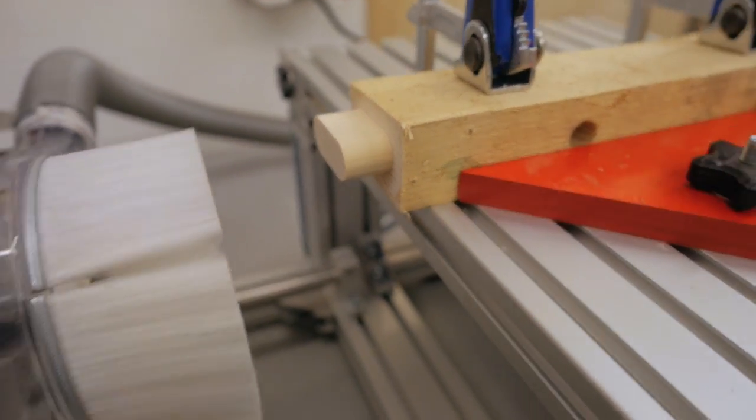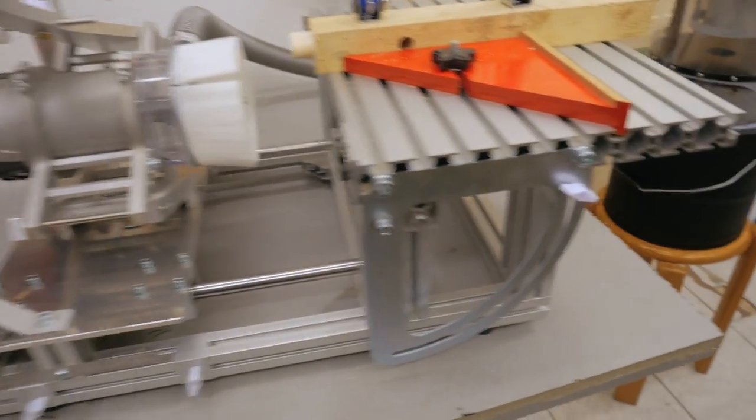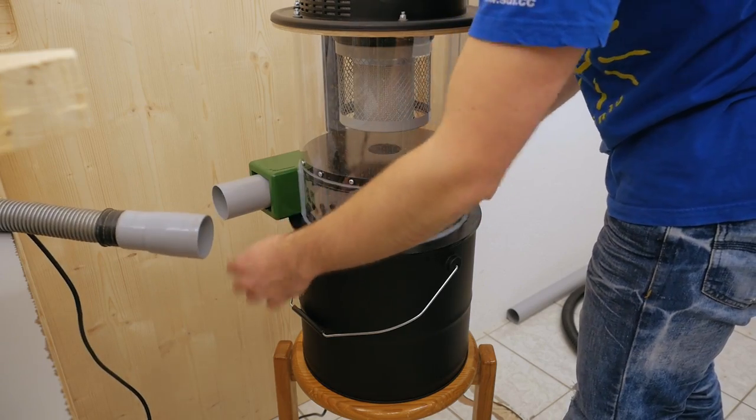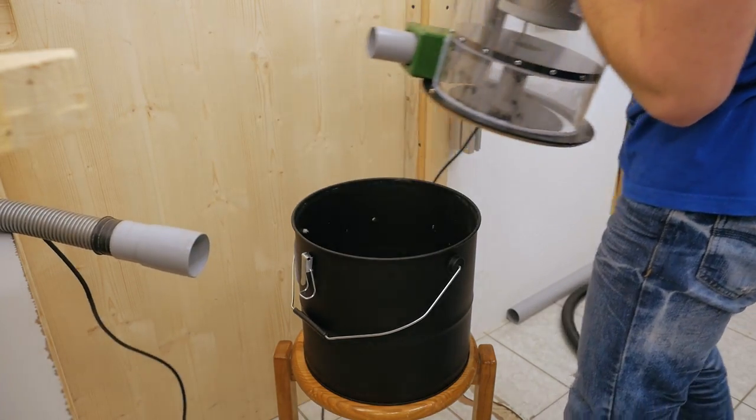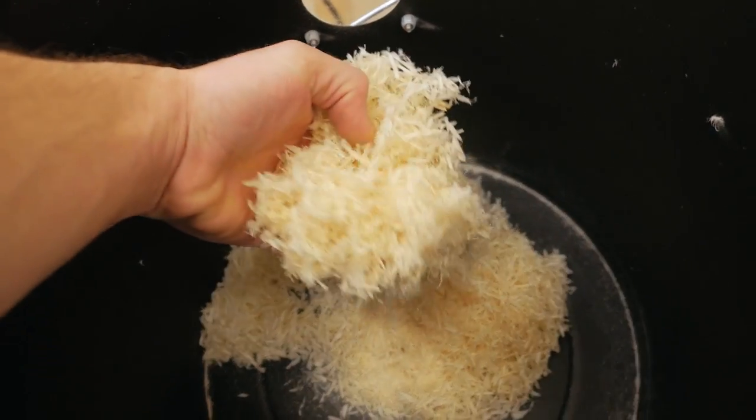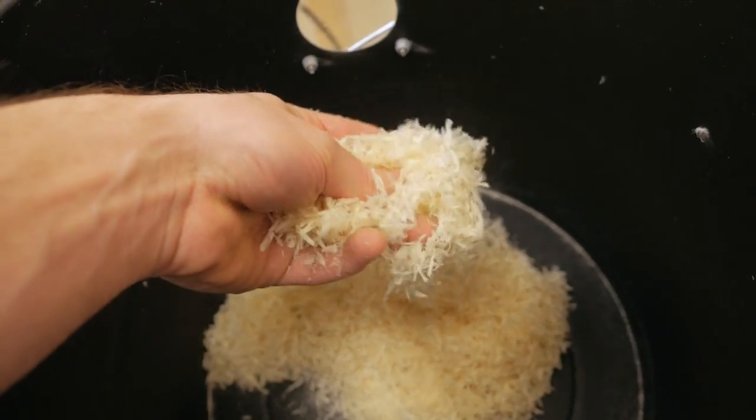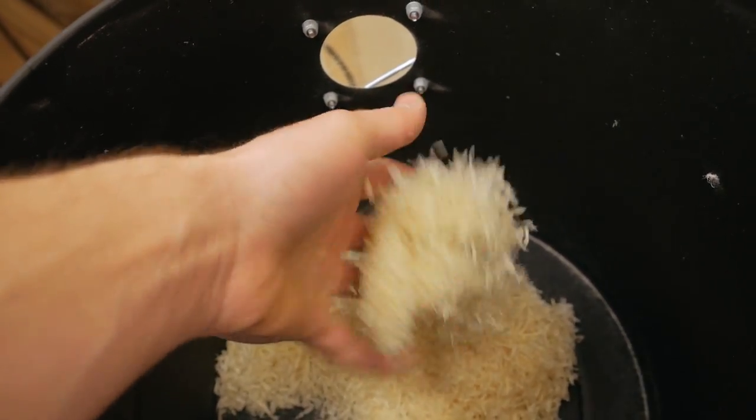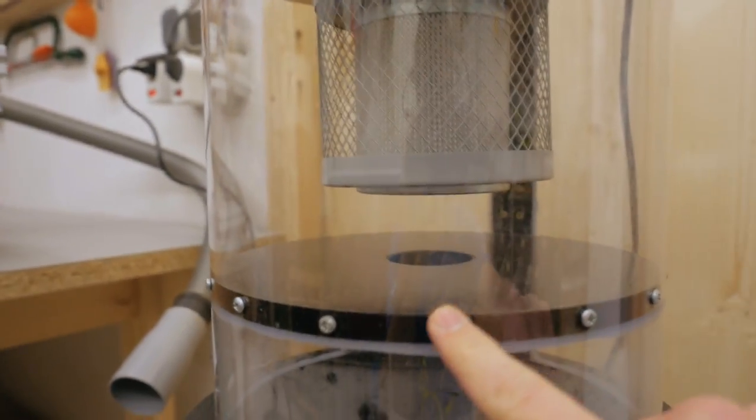Okay, mortise is cut and there's pretty much no dust around the machine. So let's look inside the bucket. So this is the amount of dust and chips that was created by this one mortise, quite a lot, but as I said in the beginning these are chips with a lot of volume.